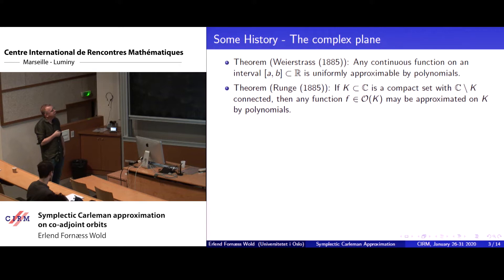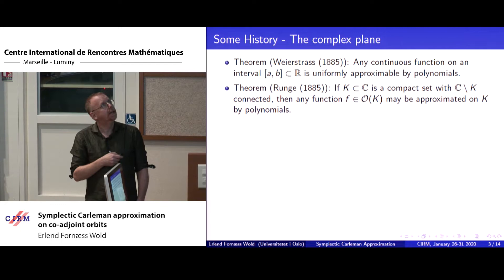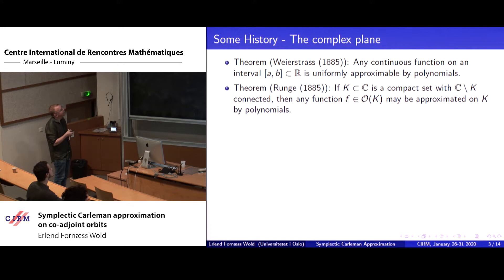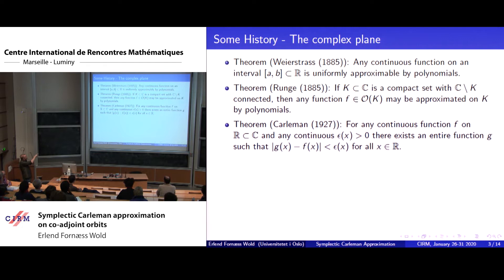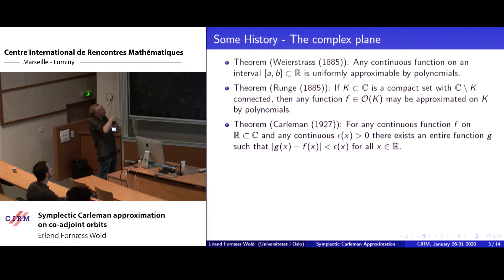Weierstrass proved that any continuous function on an interval [a,b] is uniformly approximable by polynomials. Runge's theorem tells you that if K is a compact set with C minus K connected, then any function f holomorphic on K may be approximated by polynomials. Then comes Carleman, which is a generalization of Weierstrass, telling you that you can replace the closed interval by the real line: any continuous function on the entire real line can be approximated to precision epsilon(x), where epsilon is a continuous function.